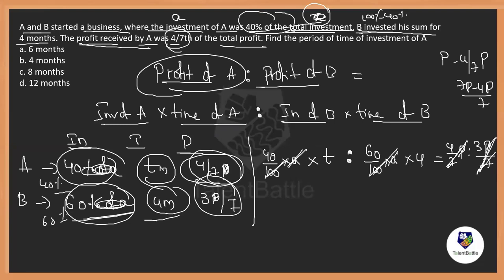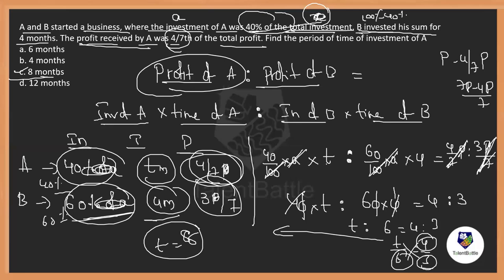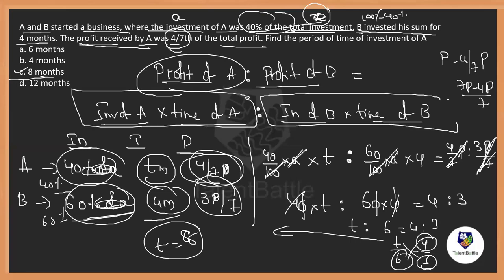Simplifying: T : 6 = 4 : 3. Cross-multiplying: 3T = 24, so T = 8 months. A invested for 8 months. Option C. The key formula for partnership is: profit ratio equals the ratio of (investment × time period) for each partner. This applies regardless of how many partners are involved.